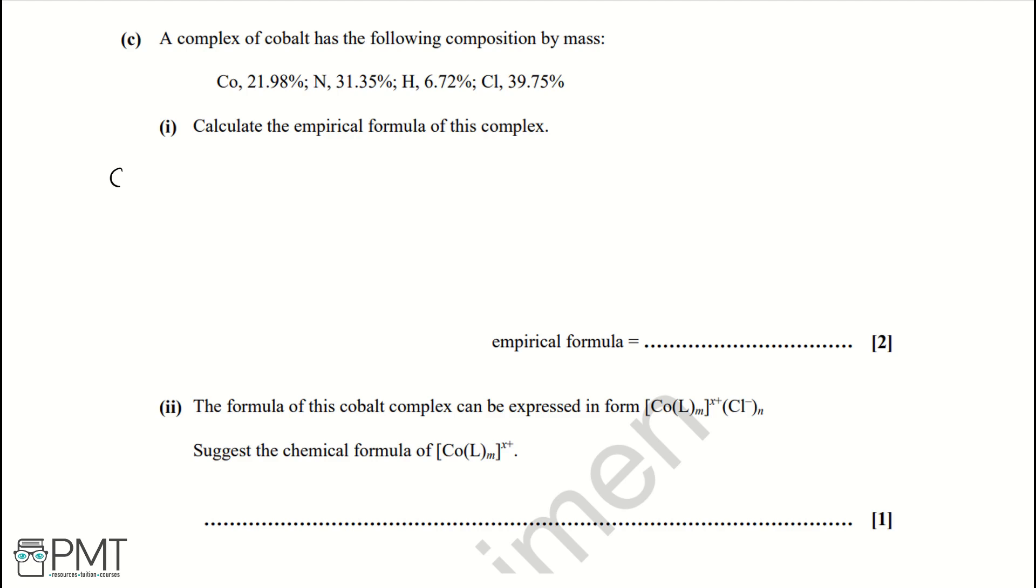Let's start with cobalt. For cobalt we have 21.98 divided by its relative formula mass 58.9, and that equals 0.373. Then for nitrogen we have 31.35 divided by its relative formula mass 14, that equals 2.24. Then for hydrogen we have 6.72 divided by its relative formula mass of 1, which equals 6.72. And then chlorine, which is 39.75 divided by its relative formula mass of 35.5, gives us 1.12.